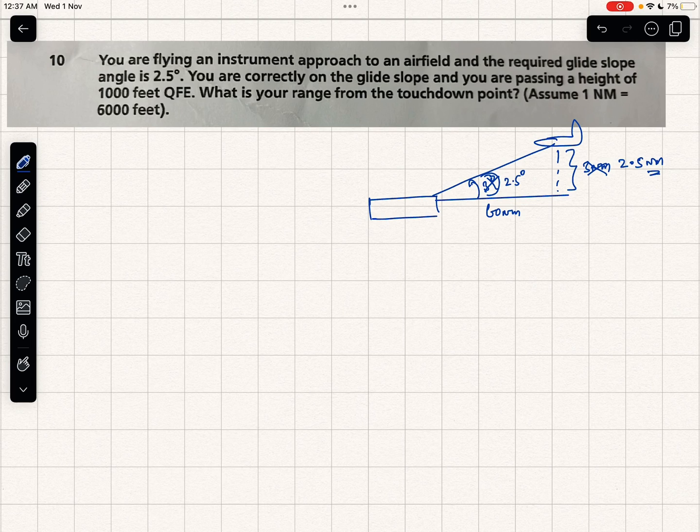For every 1 degree, 1 nautical mile. So that's how it is. At 60 nautical miles: 1 degree is 1 nautical mile, 2 degrees is 2 nautical miles, 2.5 is 2.5 nautical miles, 3 degrees is 3 nautical miles height. That is the 1 in 60 rule.